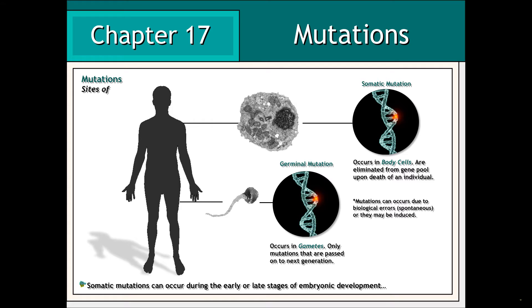Somatic mutations occur exclusively in body cells. Because reproductive cells aren't involved, such mutations will not be transmitted to future generations.